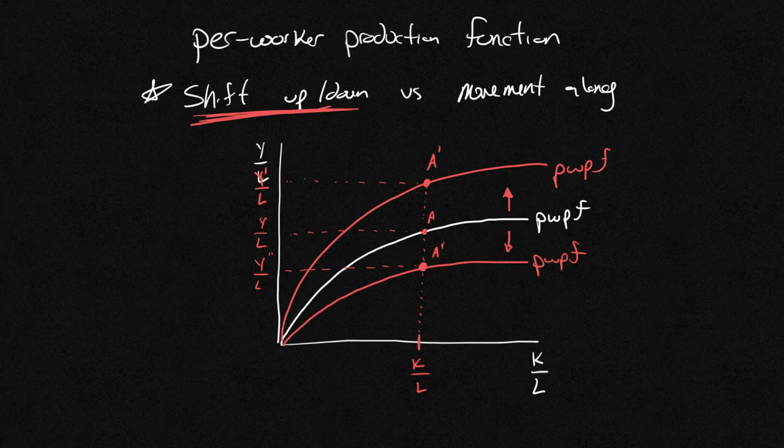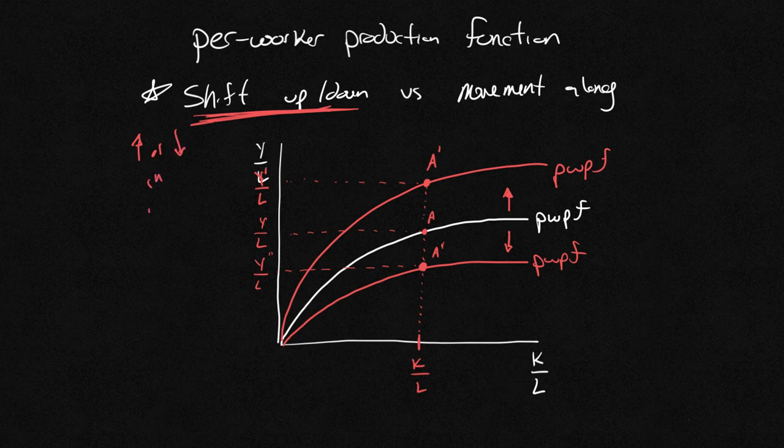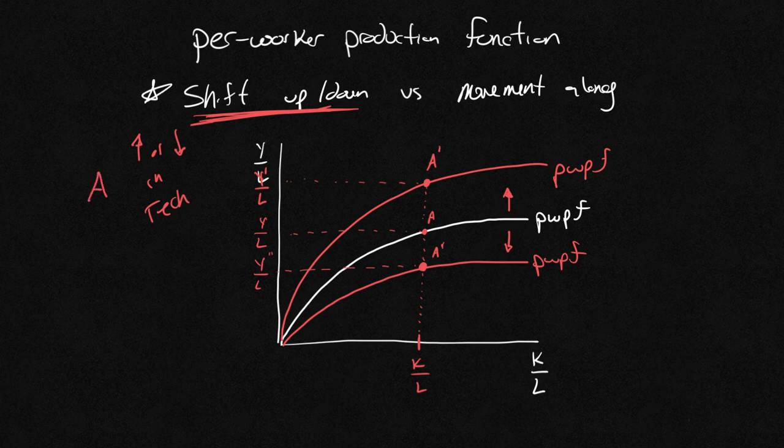So this right here is the idea of a shift up or down. It's a completely new function and it happens only when we see an increase or decrease in what we call technology. A lot of times this is represented by the letter A or the idea of total factor productivity.